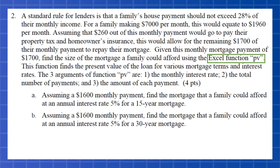A standard rule for lenders is that you shouldn't spend too much of your income on housing — we'll use 28 percent for this problem. The second problem says this family makes $7,000 per month. Make sure your document says $1,700 for the monthly payment — that's a correction if yours isn't already fixed. The question is: if they have $1,700 to spend on housing, how much house can they afford? Calculate this backwards using the Excel PV function.